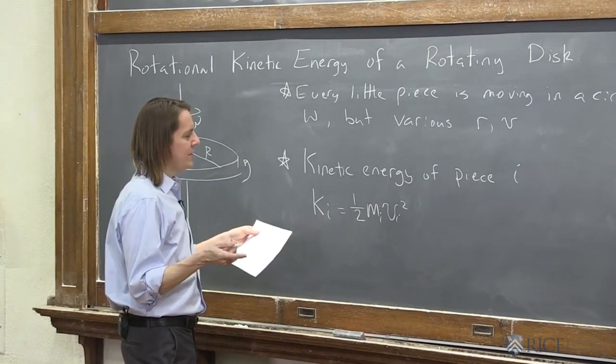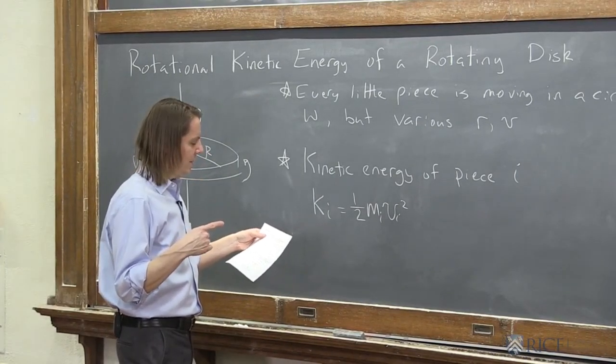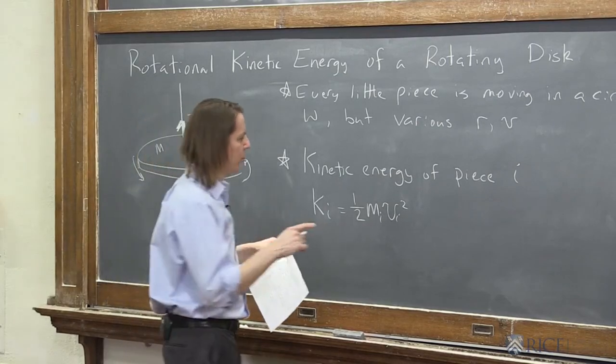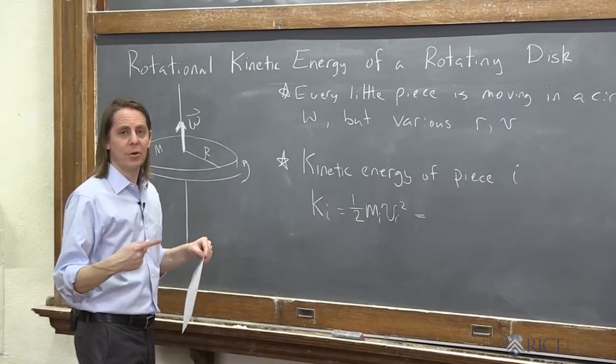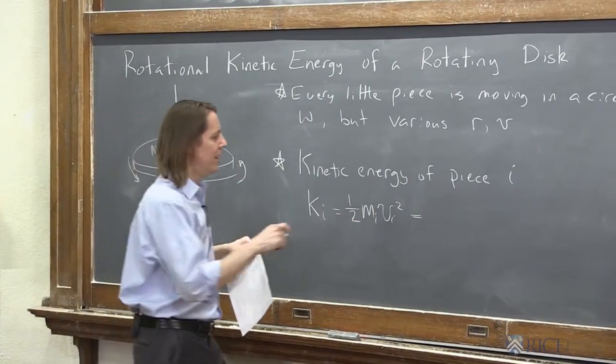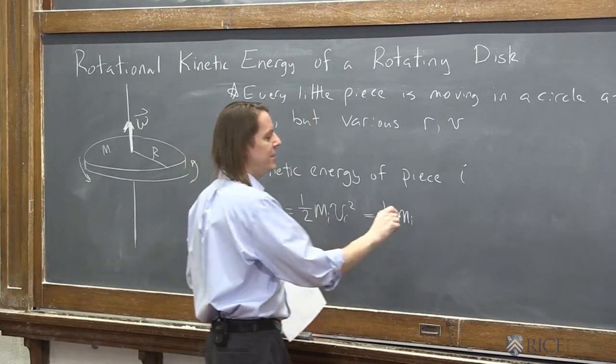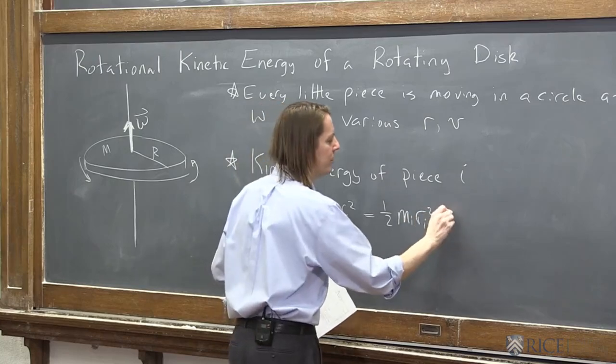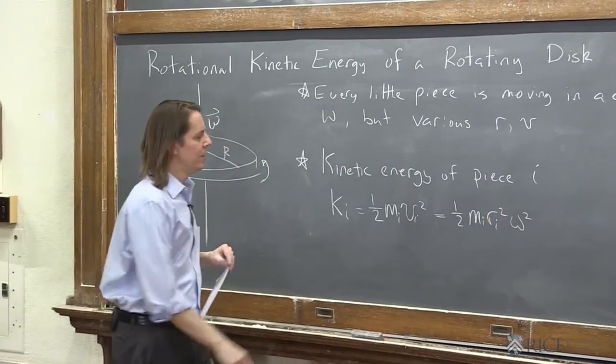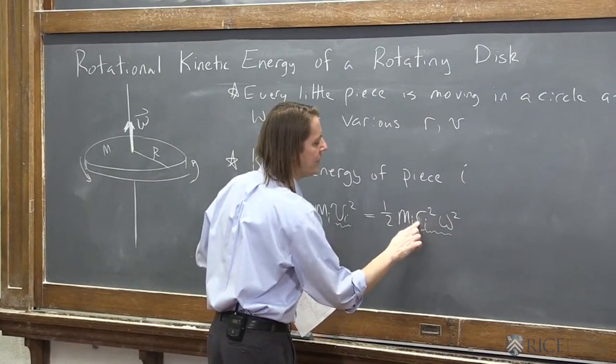But if we want to write this in terms of omega, we know that v is r times omega, like we saw last time. So it would be 1/2 the mass of piece i, and then this would be the radius of piece i squared times omega squared. Omegas are all the same. So we just took this and replaced it with that.